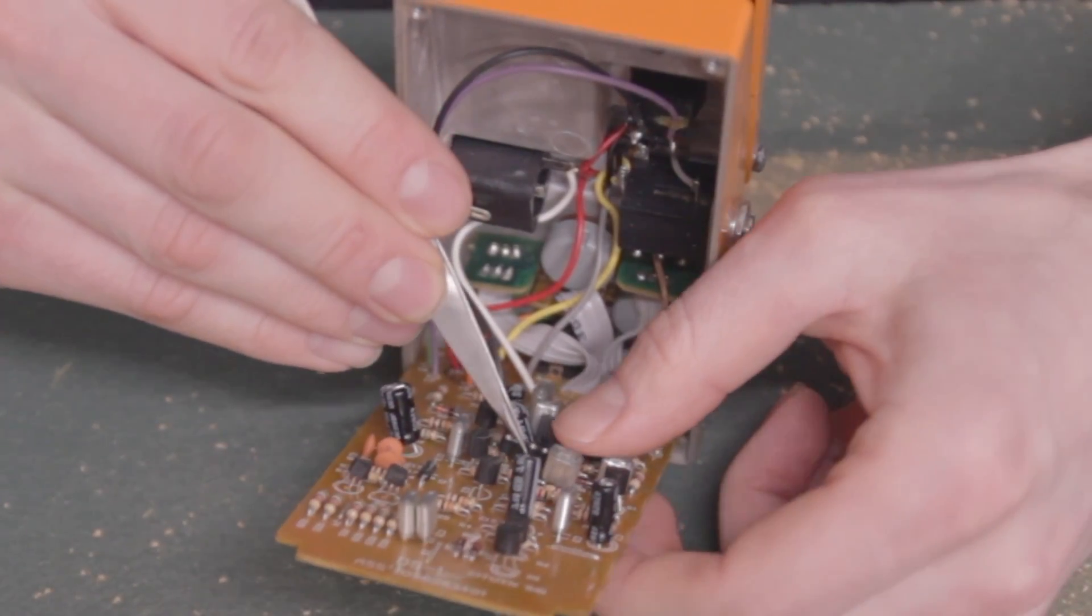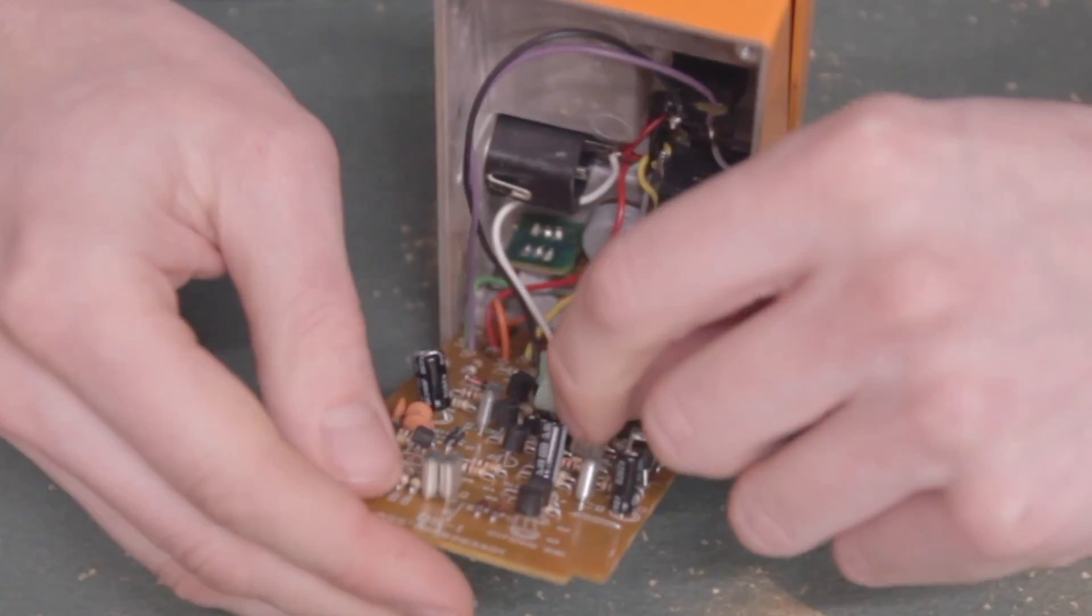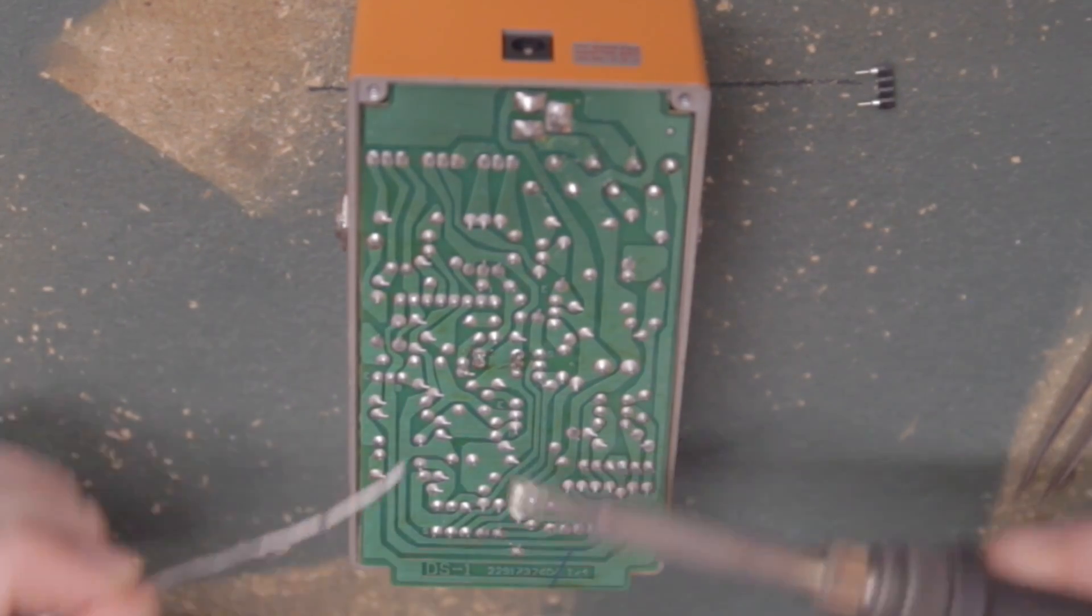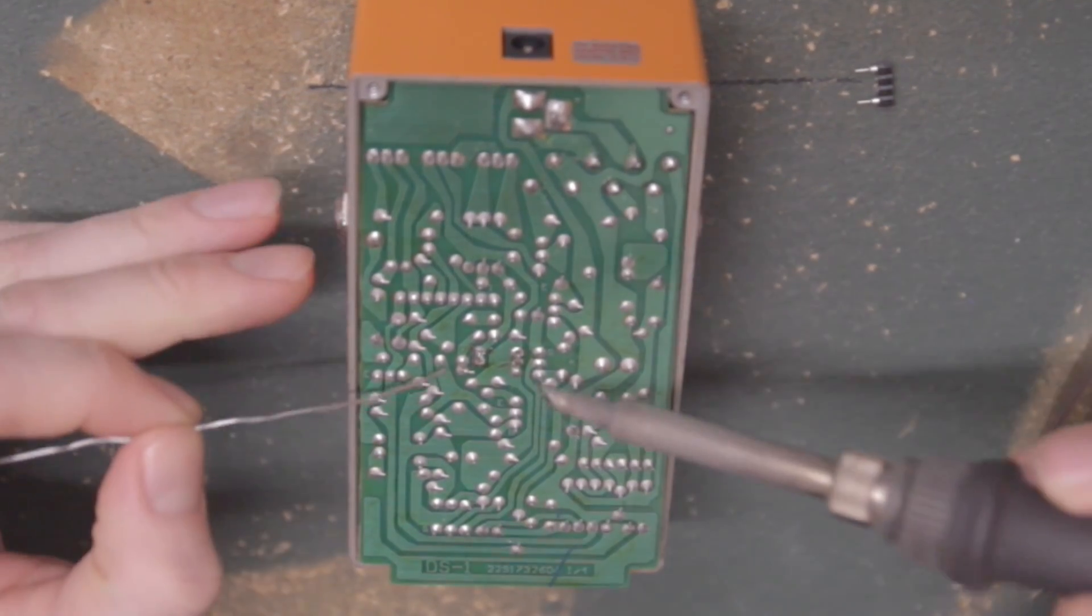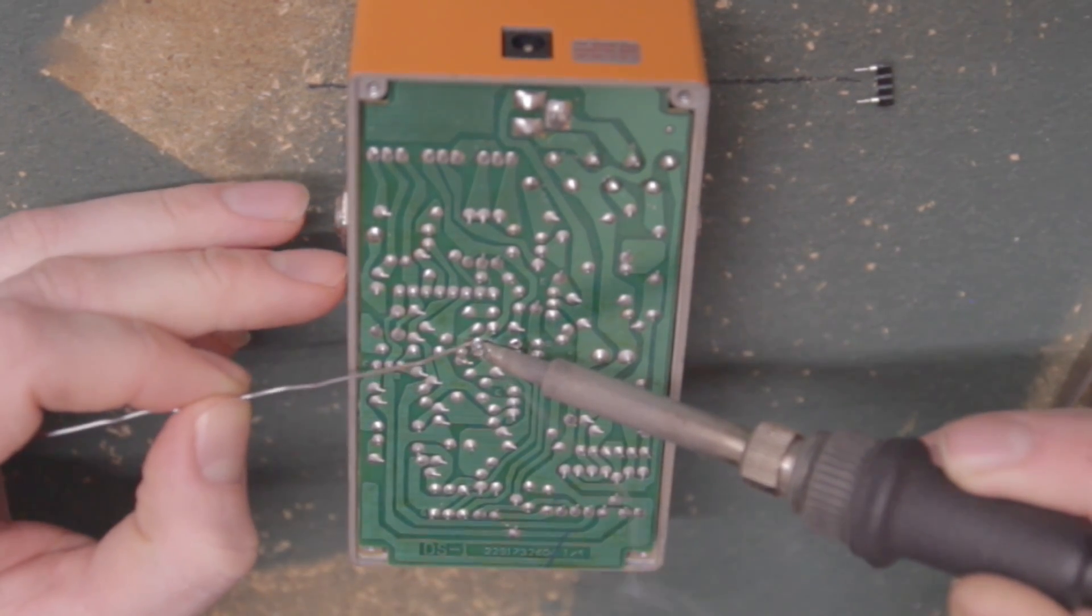Insert a socket into the holes the diodes used to be. Try to keep it flush and straight if you can. Use a piece of masking tape to hold it in place. Clean the tip of your iron, add some fresh solder to the tip, and wedge the iron between the socket leg and the PCB pad.